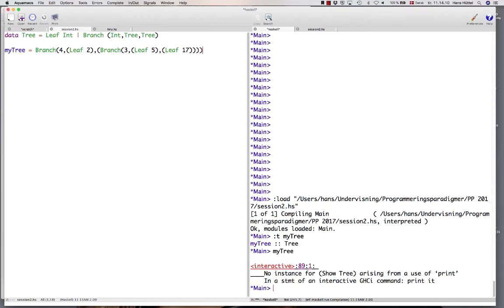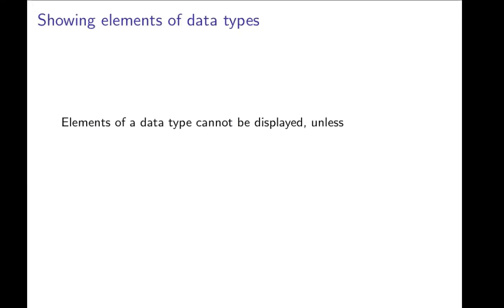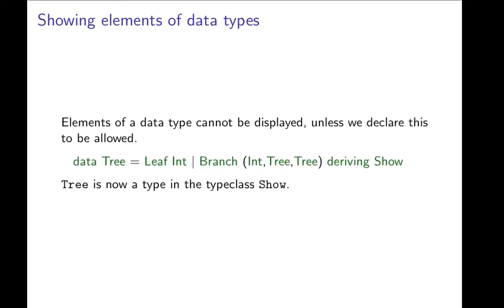How can we deal with that? Well, elements of a data type cannot be displayed unless we declare this to be allowed. So, to do this, we need to say that the data type we're defining is in the type class Show, and we do this by writing deriving Show at the end of our data type definition. And if we do that, a tree is now a type in the typeclass Show.